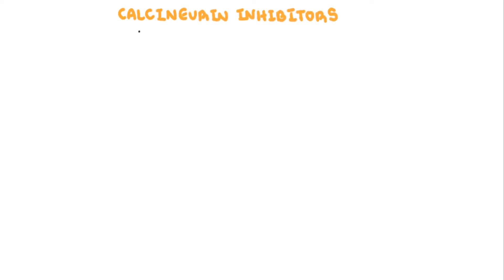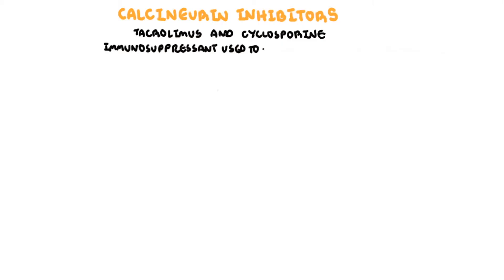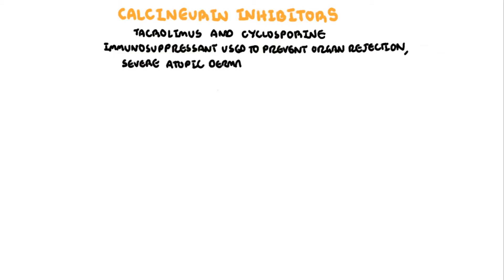In this video we're going to talk about the pharmacology of calcineurin inhibitors. Calcineurin inhibitors such as tacrolimus and cyclosporine are immunosuppressants. They are used mainly to prevent organ transplant rejection in combination with mycophenolate and steroids. They can also be used for severe atopic dermatitis, and possibly for lupus nephritis, though they are not really used as much for rheumatological conditions anymore.